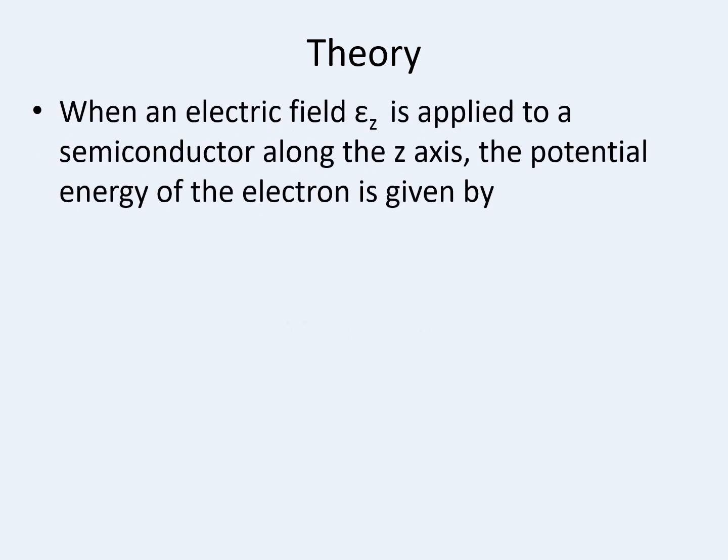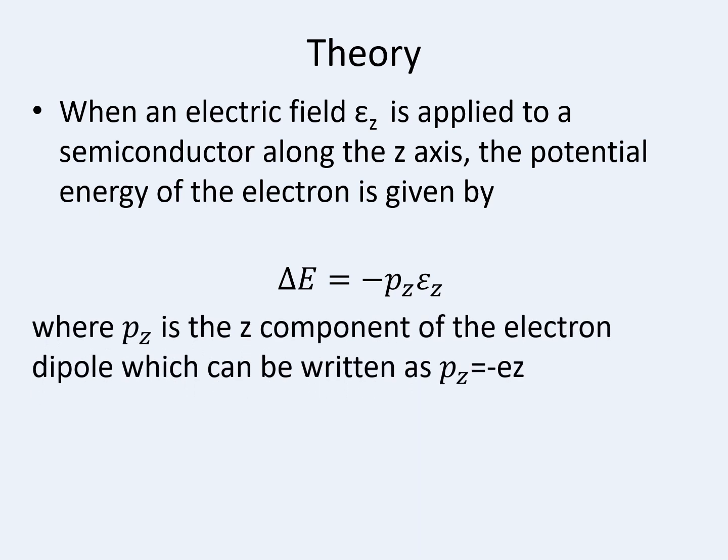Let us see the theory of quantum confinement Stark effect. Suppose I apply an electric field along the z-axis to a quantum confined system — there will definitely be a change in the potential energy of the electron. This can be written as delta E equals minus Pz times Ez, where Pz is the dipole and Ez is the electric field applied along the z-direction. I can write Pz as minus e times z, that is the product of the charge of the electron multiplied by the position. So delta E equals e times z times Ez — there is a change in potential energy because of the applied electric field. This is the theoretical approach to quantum confinement Stark effect.